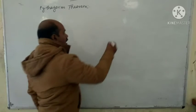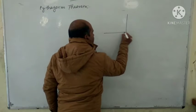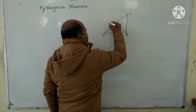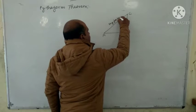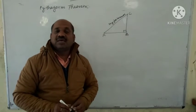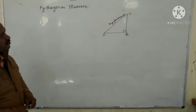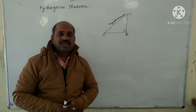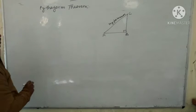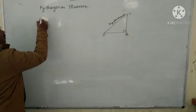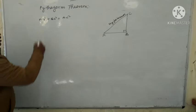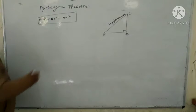What is Pythagoras Theorem? This is the right triangle KBC. The side opposite the right angle is the hypotenuse. In a right triangle, the square of the hypotenuse is equal to the sum of the squares of the other two sides. So AB square plus BC square equals hypotenuse AC square. This is known as Pythagoras Theorem.